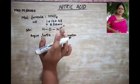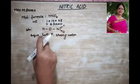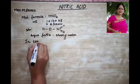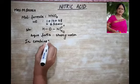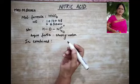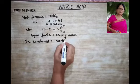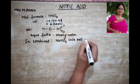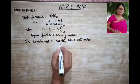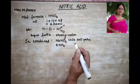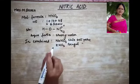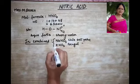Now let us understand its occurrence. Nitric acid occurs both in the free state and in the combined state. In the combined state, it is found in minerals like NaNO3, also called Chile saltpetre, and KNO3, which is called Bengal saltpetre.